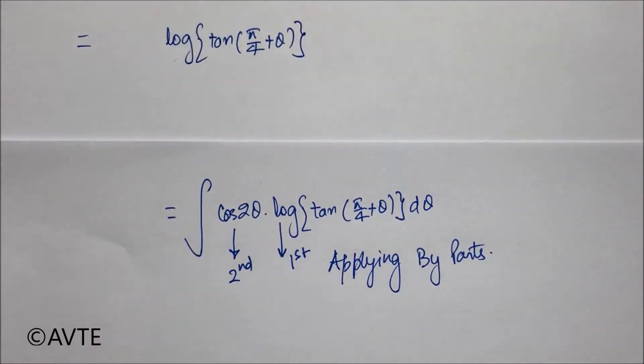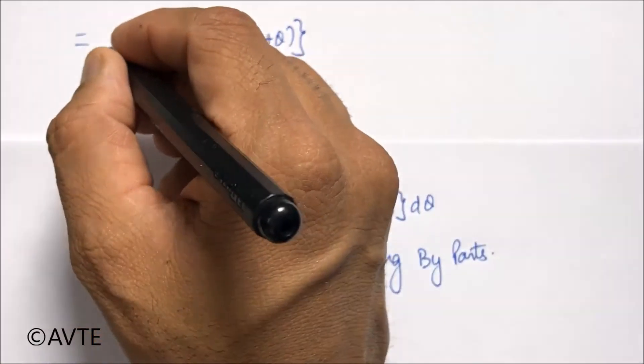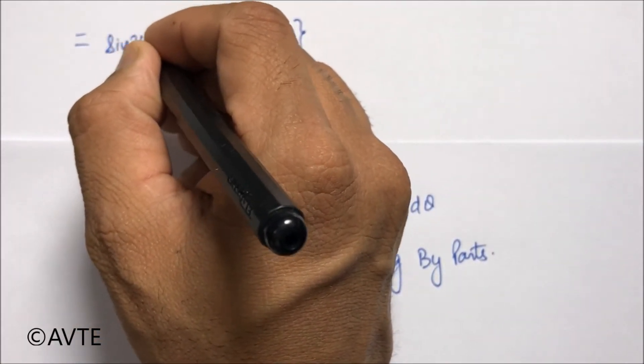Tan(π/4 + θ) as it is, the integration of cos 2θ is sin 2θ upon 2.